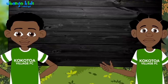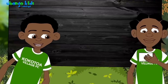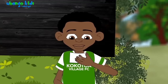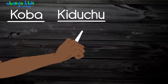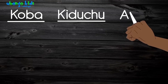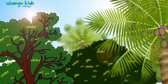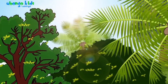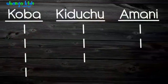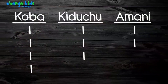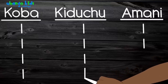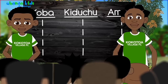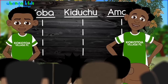Okay. Now let's add these up. Koba. Kiduchu. Amani. And the last one — Kiduchu. Alright, let's look at the results.